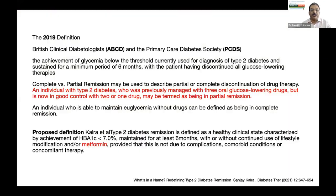Newer terminologies have emerged. Some researchers say that when you reduce from three oral drugs to two it can be called a reversal or partial remission. There are newer definitions proposed by researchers like Kalra et al., who say that even when a patient takes metformin, you can consider the patient to be in remission.